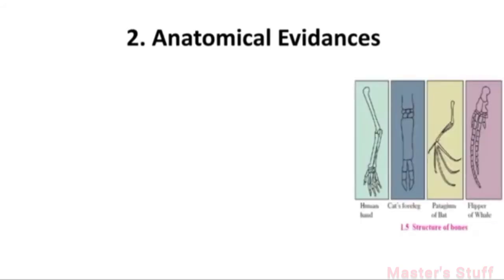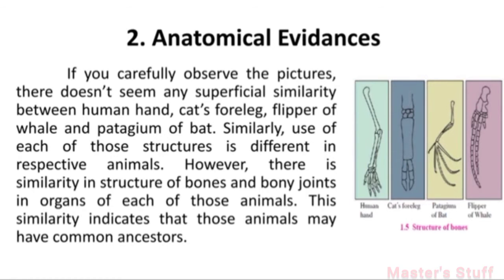Anatomical Evidence. Carefully observe Figure 1.5: human hand, cat's foreleg, wing of bat, and flipper of whale. There may not be obvious similarity at first glance, but pay attention to their internal structure. The bones and bone joints in each of these different animals show similarity. This similarity in bone joints indicates that they share common ancestry.